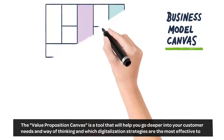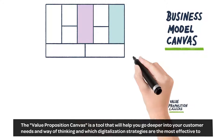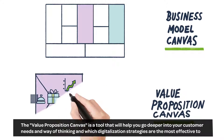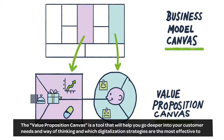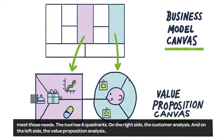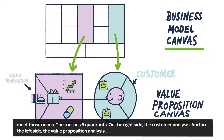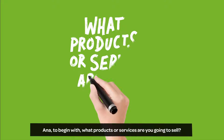The Value Proposition Canvas is a tool that will help you go deeper into your customer needs and way of thinking, and which digitalization strategies are the most effective to meet those needs. The tool has six quadrants: on the right side, the Customer Analysis, and on the left side, the Value Proposition Analysis.